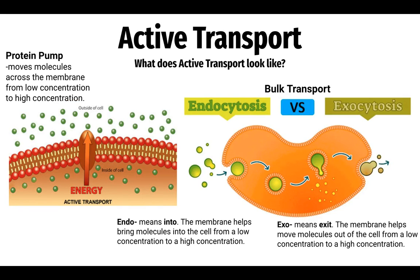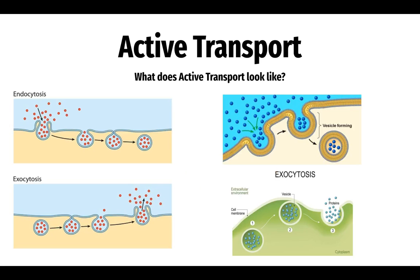Here we have a protein pump — it's going to move things against the concentration gradient, from low concentration to high concentration, and it requires the input of energy. When we're dealing with bulk transport, we have endocytosis and exocytosis — things are either moving into or out of the cell. Here's another picture of endocytosis, something coming into the cell. This is called a vesicle, or transport vesicle. Once the cell has reached out its membrane and wrapped around some food particles, it pinches off to create this vesicle. In exocytosis, it's exactly the opposite — the vesicle is sent to the membrane to release all of its contents.